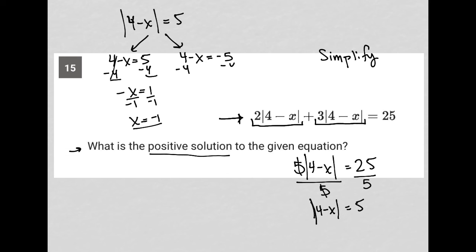Here I subtract four from both sides. And I'm left with negative x is equal to negative nine. Same deal. I divide both sides by negative one. And what I'm left with is that x is equal to positive nine. So there is my positive solution. So the answer to this question must be nine.